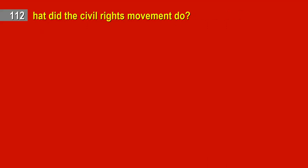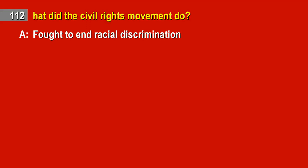Question 112. What did the Civil Rights Movement do? Answer: Fought to end racial discrimination.